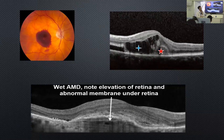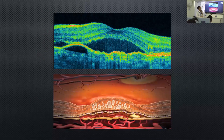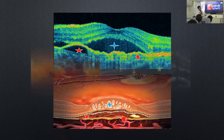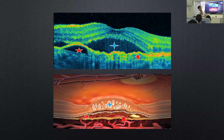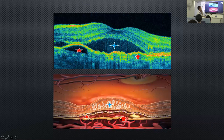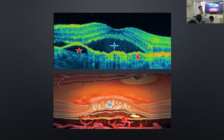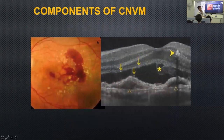You can see the correspondence between the cartoon illustration and the OCT pictures. There is subretinal fluid, a pigment epithelial detachment, a choroidal neovascular membrane with blood, and intraretinal fluid. Here's another example showing blood sticking to the undersurface of the retina, intraretinal fluid, a choroidal neovascular membrane with blood, and pigment epithelial detachment.